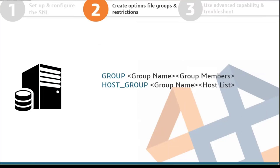The first thing when writing the options file is creating groups and restrictions. Before restricting licenses, break users into groups. Groups make administration much easier — if an engineer leaves or a new one joins, you just update that group. If you wrote the whole options file by individual username, you'd have to search every line when something changes. Groups go off your Windows username.